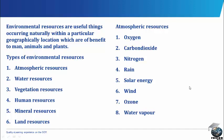There are types of environmental resources. There are five main environmental resources and these are: 1. Atmospheric resources, 2. Water resources, 3. Vegetation resources, 4. Human resources, 5. Mineral resources, 6. Land resources.